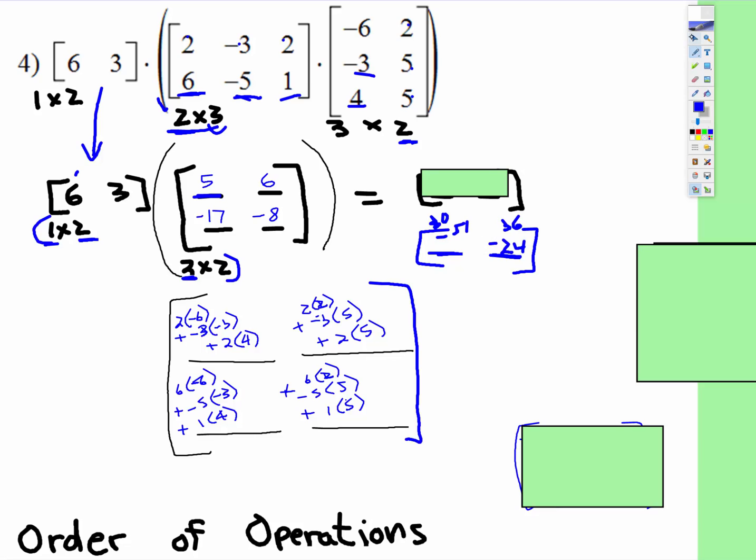So we have 30 plus negative 51, which should be negative 21, and 36 plus negative 24.